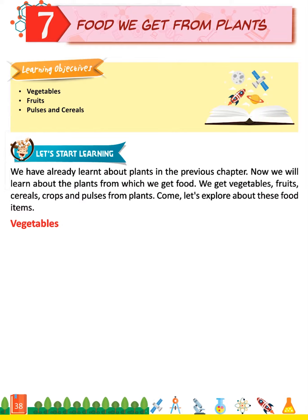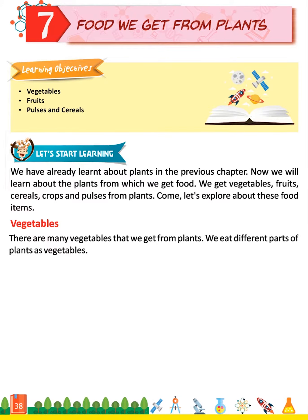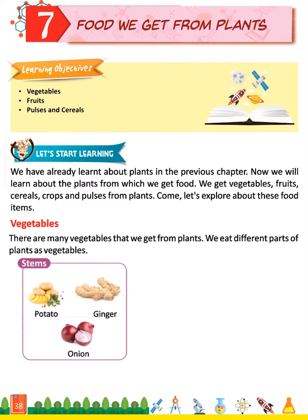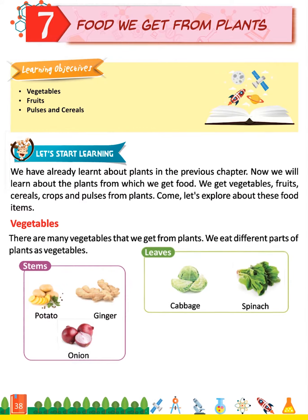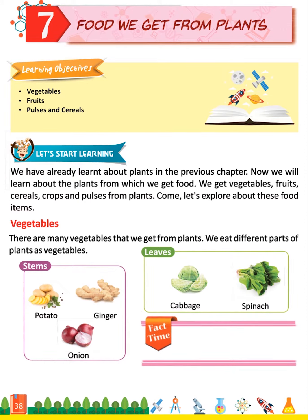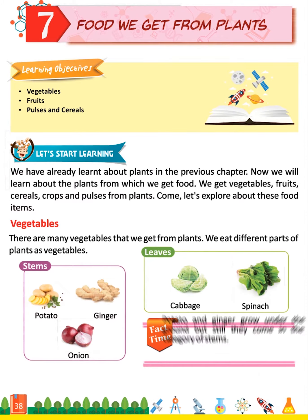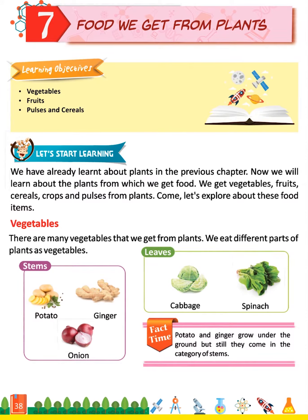Vegetables: There are many vegetables that we get from plants. We eat different parts of plants as vegetables. Stems: Potato, Ginger, Onion. Leaves: Cabbage, Spinach. Fact time: Potato and ginger grow under the ground, but still they come in the category of stems.